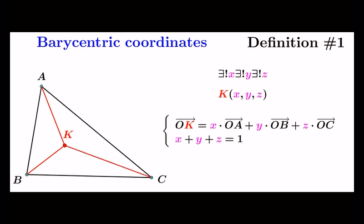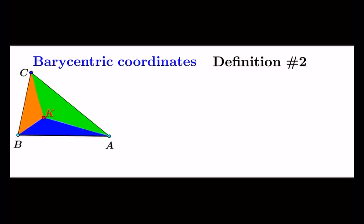Based on this observation, we will proceed to the second definition, the area-based definition. The barycentric coordinates of a point K are three numbers x, y, z corresponding to the three vertices of the triangle ABC and the sides opposite these vertices.